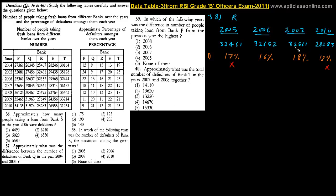The difference between 32652 and 32561 is approximately 100 out of 32500, which is about 0.3% more. But the percentage for 2007 is 2% more than for 2006. So comparing the two, 2007 has 2% higher rate and only 0.3% fewer loan takers — 2006 is ruled out. The answer is 2007, so option 3 is correct.